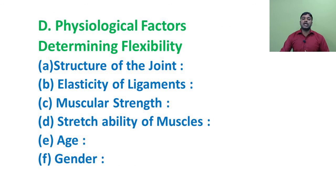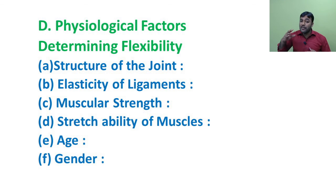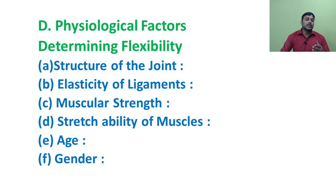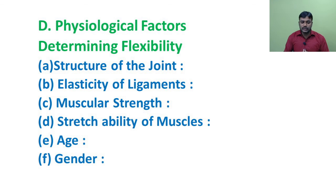Next, fourth: physiological factors determining flexibility. Flexibility is defined as the maximum range of movement possible at a joint. Some factors determining flexibility are: structure of the joint, elasticity of ligaments, muscular strength, stretchability of muscles, age, and gender.